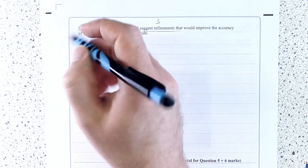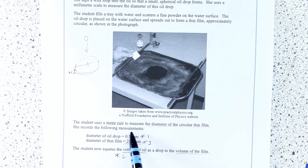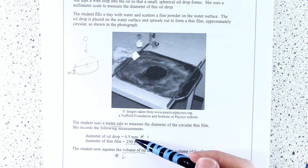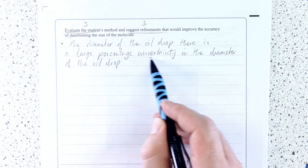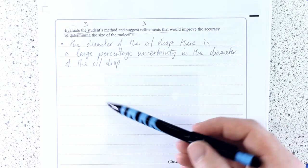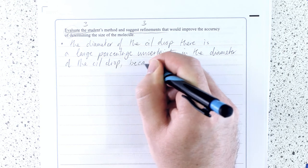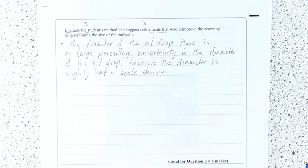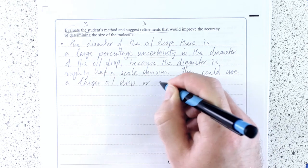Okay, so, firstly, the diameter of the oil drop. Notice, the diameter of the oil drop is half a millimeter. And the scale division on a meter ruler is a millimeter. So, that is not a very accurate way to do it. There is a really large uncertainty compared to the measurement. There's a large percentage uncertainty. Think about percentage uncertainties a lot in this exam because it's the first time, this new thing in this syllabus, they're going to be looking to examine your understanding of measurements causing large percentage uncertainties, which is the big thing we want to eliminate. Okay, why is that? Because the diameter is roughly half a scale division.